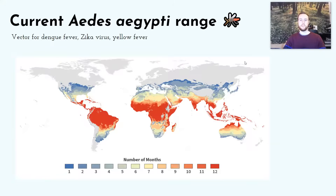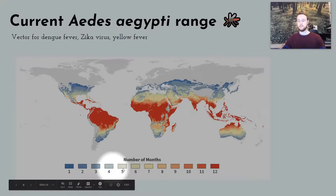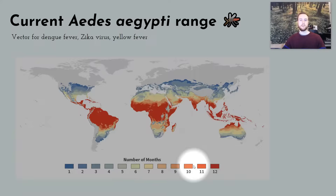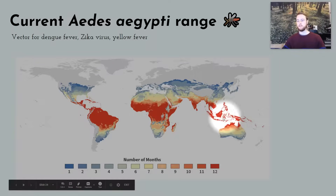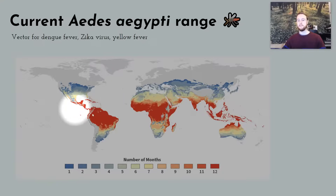A Stanford projection shows the current range of Aedes aegypti — a mosquito species capable of transmitting dengue fever, Zika virus, and yellow fever. On a world map, colors indicate the months per year these mosquitoes can survive in each region. Near the equator they survive year-round; at higher northern latitudes, only one or two months per year, making those populations far less vulnerable to these transmittable diseases.